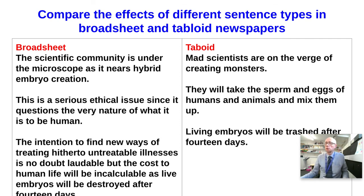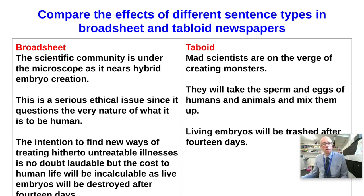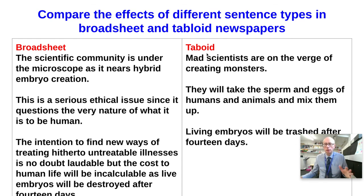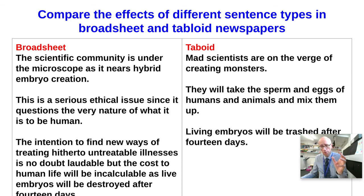Some of you on your language investigations might be taking a particular story and looking at the way people and events are represented through language in different newspapers. On the left-hand side we've got a broadsheet newspaper like The Times or The Guardian; on the right we've got a tabloid — The Sun or The Daily Mirror. This is the same story represented in different ways. Pause the video and try to identify which sentence types you're seeing.